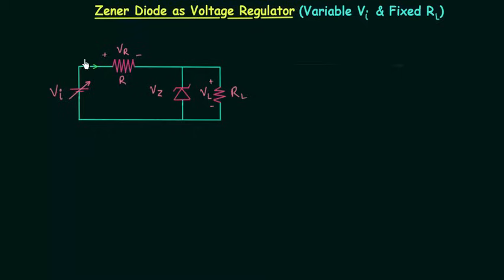Current through this branch is IR, current in this branch is IZ, and current through load resistance is IL. We will find out the condition for minimum input voltage.